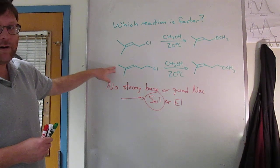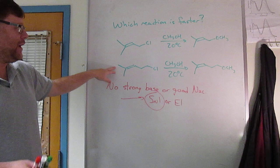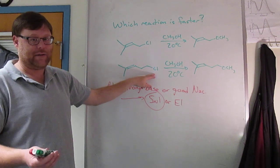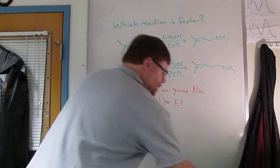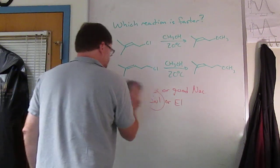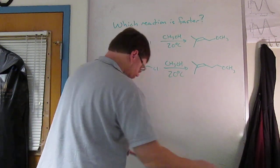Now you have to figure out which substrate does a better SN1, is going to react faster in the SN1 reaction. The leaving group's the same, so that's not going to be the difference. What's going to be the difference? Well in an SN1 reaction we're going to make a cation.